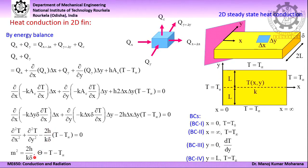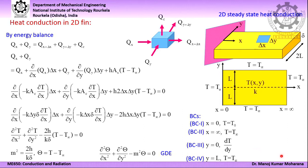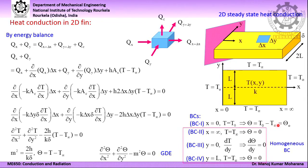We also take 2h/k·delta = m². Using this transformation, we rewrite the governing differential equation and the 4 boundary conditions. The governing differential equation becomes: ∂²θ/∂x² plus ∂²θ/∂y² minus m² times theta = 0. The boundary conditions become: at x = 0, theta = T₀ − T∞ = θ₀; at x = infinity, theta = 0; at y = 0, dθ/dy = 0; and at y = L, theta = 0.